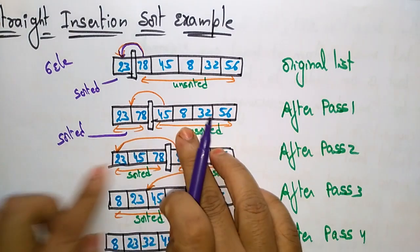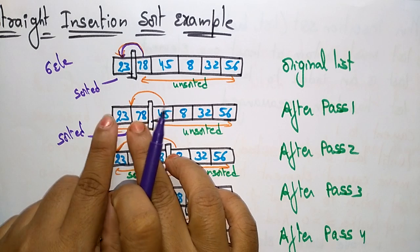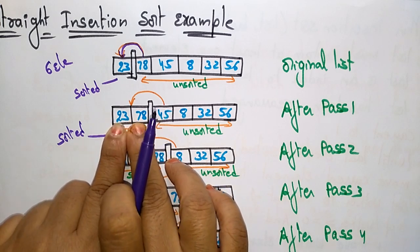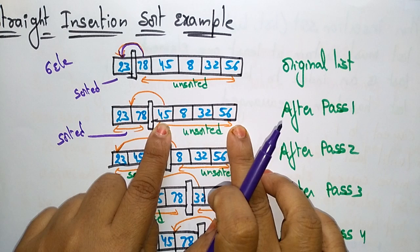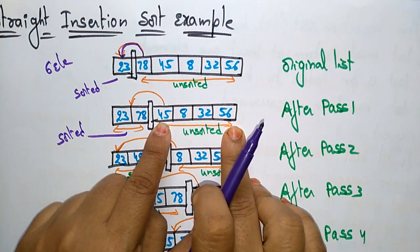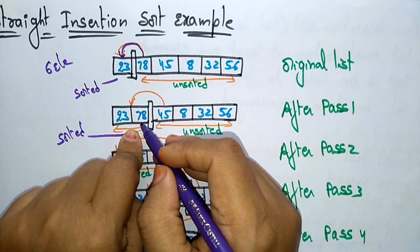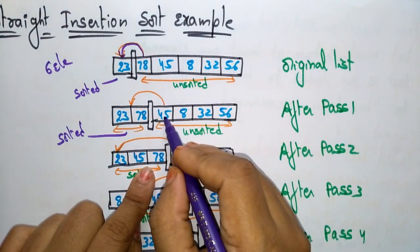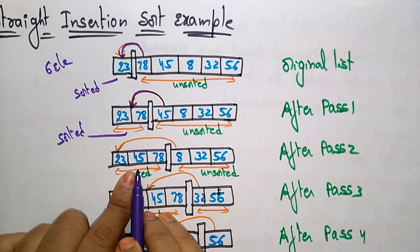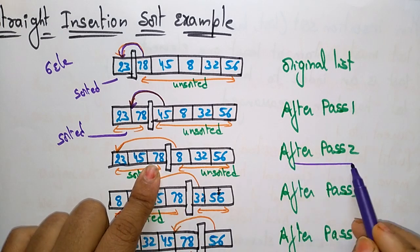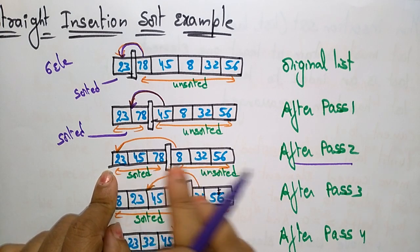These elements are unsorted, but when compared to these two elements only, this is a sorted list. According to the definition of stride insertion sort, take the first element and insert it wherever it fits. After pass two, 45 is placed in between 23 and 78, giving the sorted sublist 23, 45, 78 in ascending order. The remaining elements are unsorted.